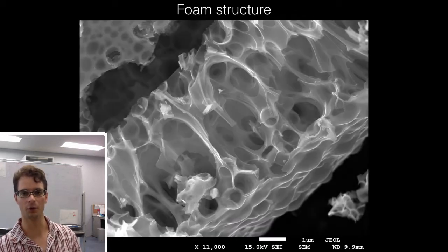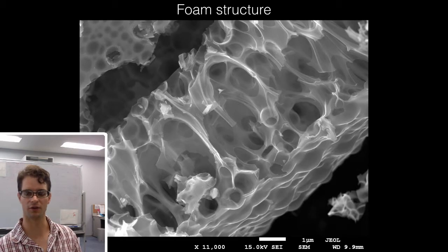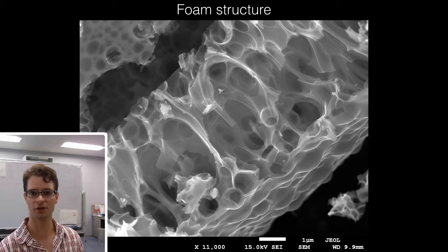Under the scanning electron microscope, this foam-like structure looks like this. So we see a very open structure with a very high surface-to-volume ratio, therefore good for catalytic materials.